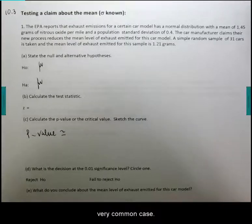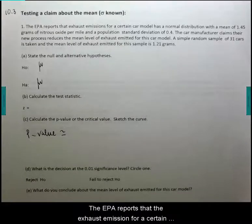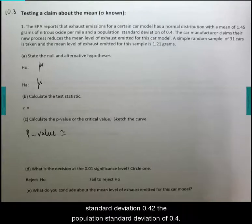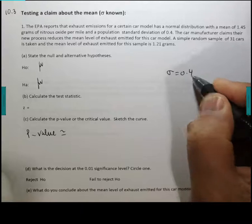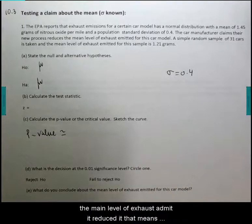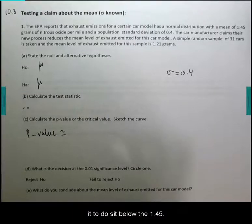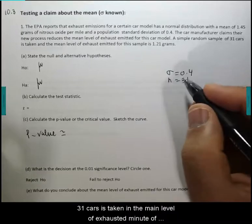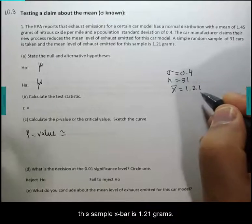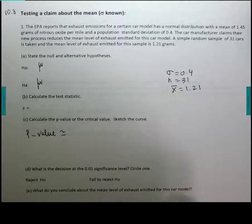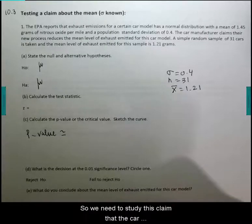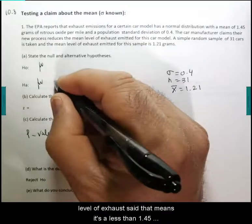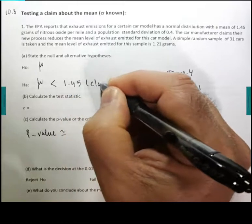The EPA reports that exhaust emission for a certain car model has a normal distribution with a mean of 1.45 grams of nitrous oxide per mile and a population standard deviation of 0.4. The car manufacturer claims that their new process reduces the mean level of exhaust emitted. A simple random sample of 31 cars is taken and the mean level of exhaust emitted for this sample, x-bar, is 1.21 grams. We need to study this claim that the car manufacturer claims their new process reduces the mean level of exhaust, meaning it's less than 1.45. This is your claim.